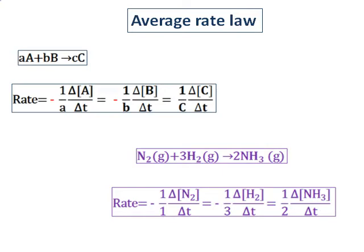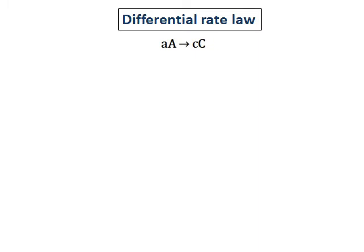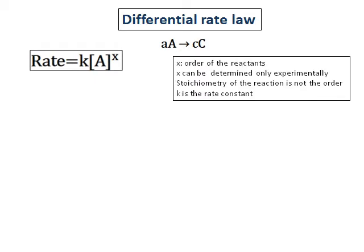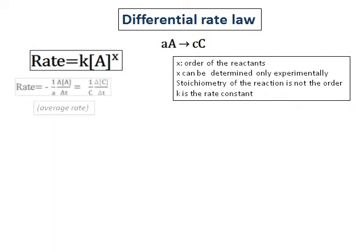In the case of average rate, it is very important that we have a negative sign in front of the reactants, and the rates have to be divided by the stoichiometry of the reaction. Therefore, before even starting, remember to balance the equation. Now we will focus on the second rate law, called the differential rate law. The reaction we are going to consider is aA giving you cC, where small a and small c are the stoichiometry. The rate of this reaction is defined as rate equals K, concentration of A, raised to the power of X. Compare it with the differential rate law: rate equals 1 over a, times the change in concentration of A divided by T.